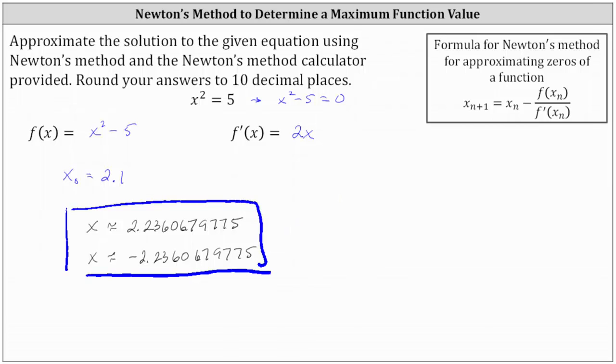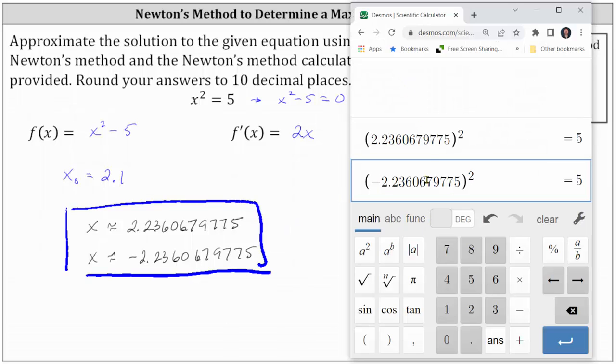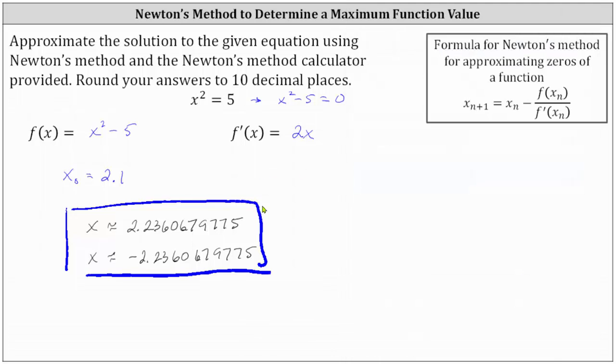And let's just check this on the calculator. Notice the calculator does show the square of both of these values is equal to 5. But that's not actually true. It's just so close to 5 the calculator is giving a value of 5. But this does verify our approximations are excellent approximations for the actual solutions which we should recognize as plus or minus square root 5. I hope you found this helpful.